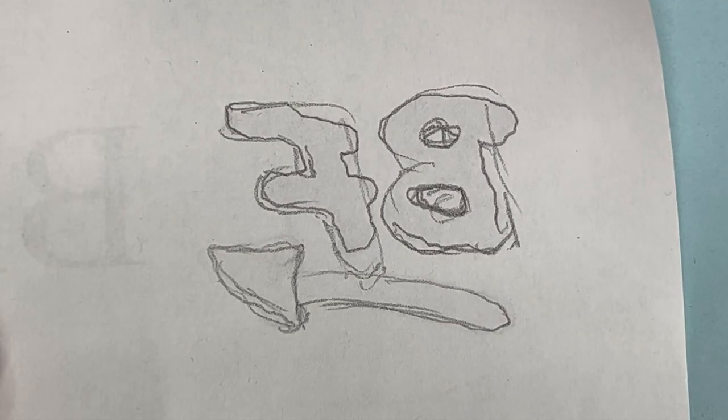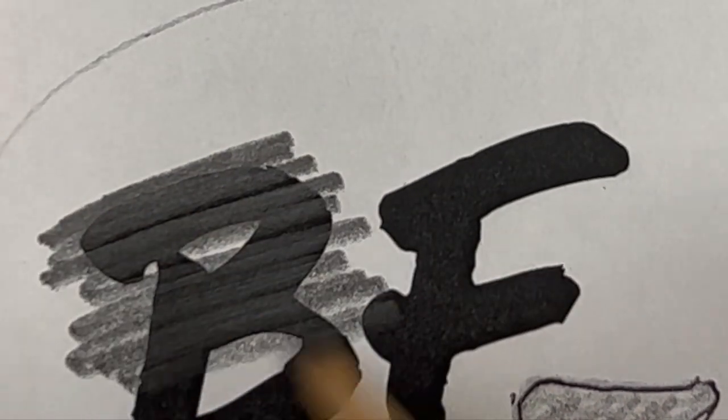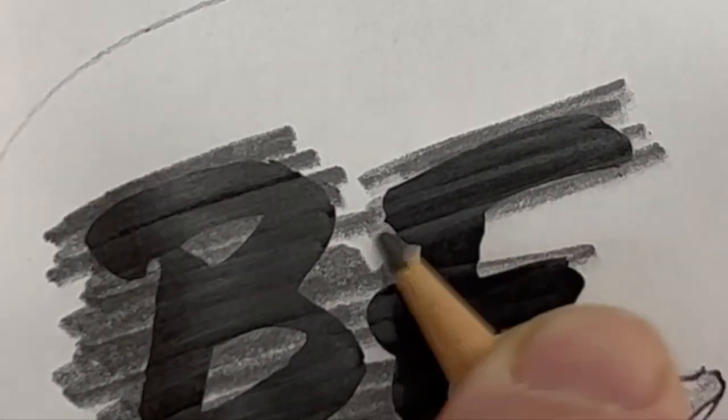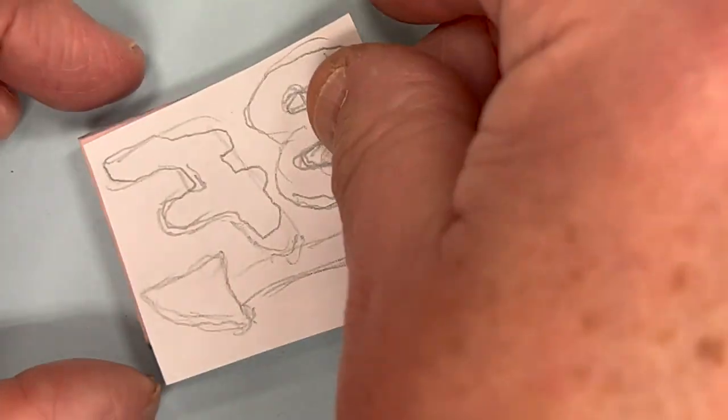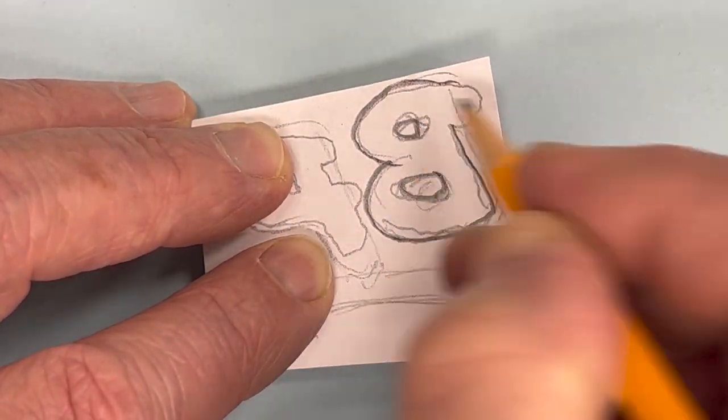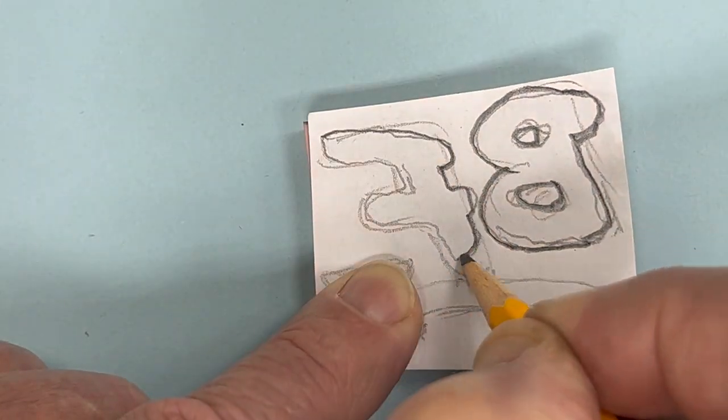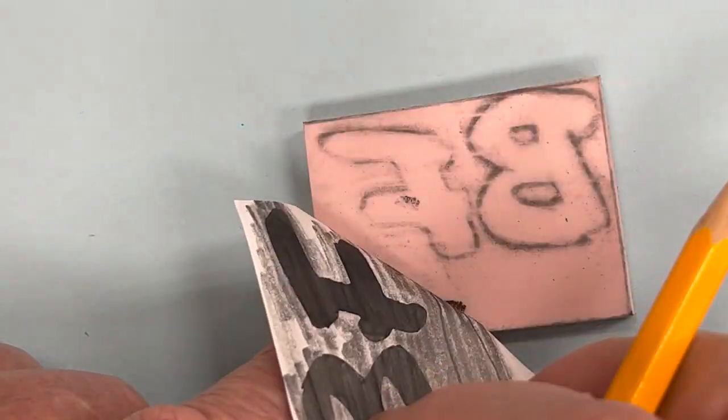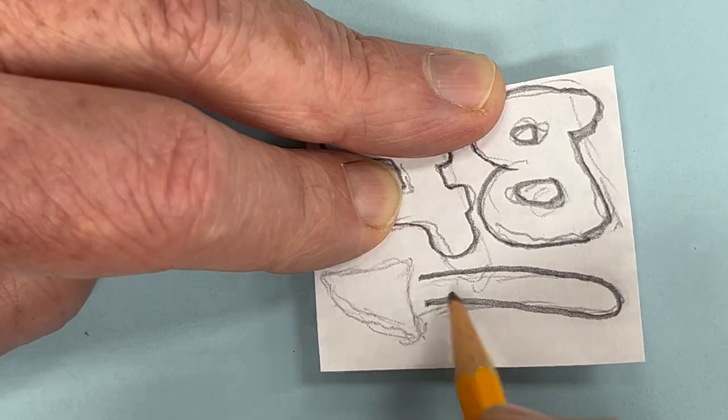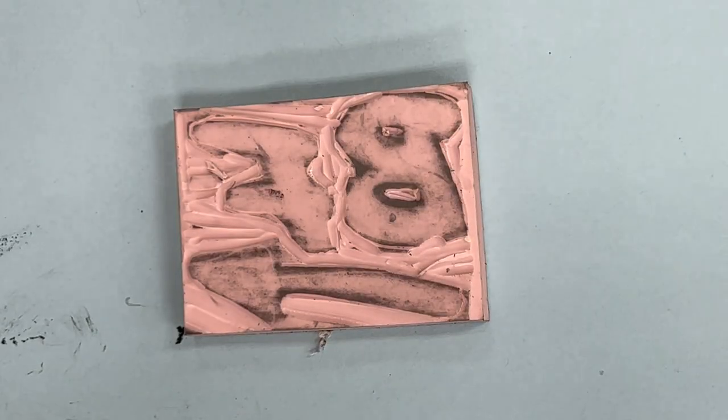I'm going to test an idea that if I put pencil graphite on the back of the paper and flip it over, then when I trace the letters, maybe it'll transfer to the rubber material. Oh, check it out. It transfers really well. That way I can get an exact duplicate of what I drew on the material itself. So here's my new stamp.